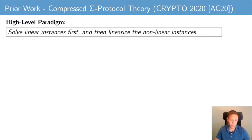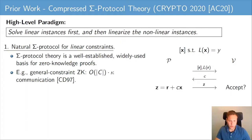The starting point of our work is compressed sigma protocol theory as introduced at Crypto 2020. The high-level paradigm is to solve linear instances first and then linearize nonlinearities — first construct a protocol for proving that secret input factors satisfy a linear relation, then construct a technique to linearize nonlinearities. The starting point of this theory is a natural sigma protocol for linear constraints, which allows a prover to prove that it knows an opening to a commitment, where the opening satisfies a linear constraint captured by this linear form L.